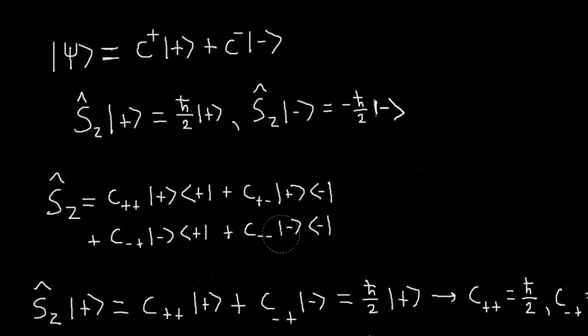So for example, if I, you know, you just do this term by term, so the first term, I will have a plus, an inner product of plus with plus, which is just one, because we're assuming these basis vectors are orthonormal. And then I'll have a C++ and plus state left over.